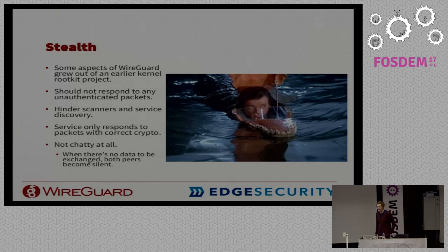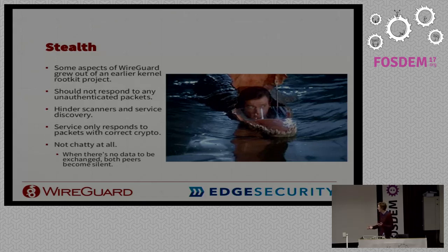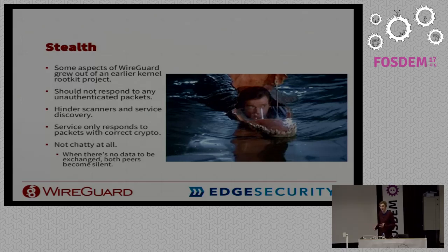Another principle is that WireGuard should be stealthy. I do a lot of offensive security, and WireGuard actually grew out of an exfiltration method of a rootkit I was working on — it needed to be super stealthy, hide packets, not be discoverable by scanners. It turns out those offensive security principles are actually really good for defending a network too. WireGuard doesn't reply to any unauthenticated packets, so it's completely invisible to port scanners. It's also not chatty — when two peers aren't sending data, it goes to sleep and doesn't send anything.